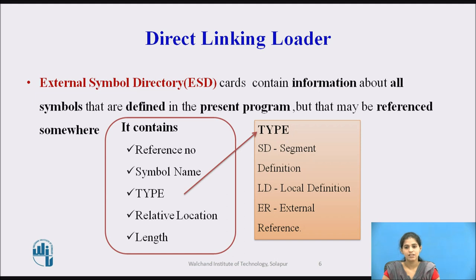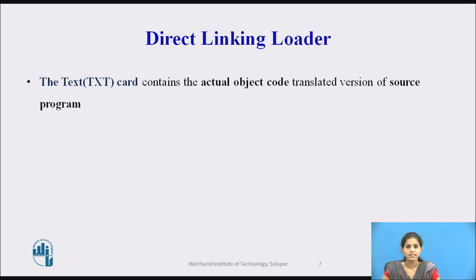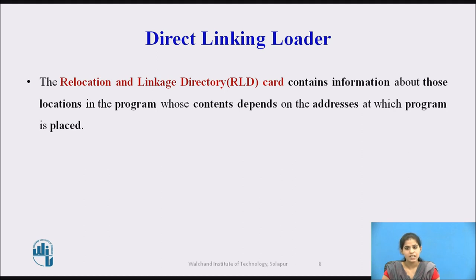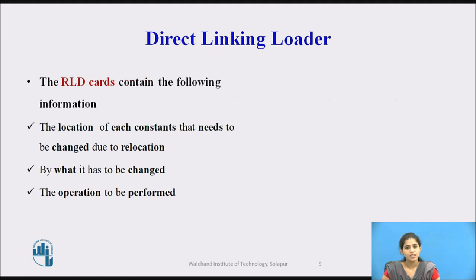The Text card contains the actual object code — it is the translated version of the source program. The third card, the Relocation and Linkage Directory (RLD) card, contains information about those locations in the program whose contents depend on the addresses at which the program is placed.